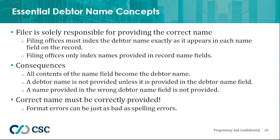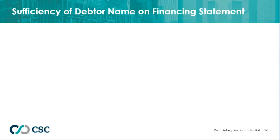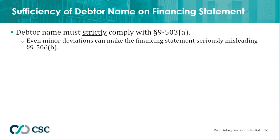What does it mean to have a sufficient debtor name on a financing statement? The debtor name must either strictly comply with Section 9-503(a) — and when I say strictly, I mean strictly, it has to be exact. Even a comma out of place or an extra space means it's not the name of the debtor, and under Section 9-506(b), the financing statement is seriously misleading and not effective — the secured party is unperfected. So it must strictly comply, or the financing statement is seriously misleading, with one exception: if a search of the filing office records on the correct name using the jurisdiction's standard search logic would find the financing statement with the incorrect debtor name, then that incorrect name does not make the financing statement seriously misleading.